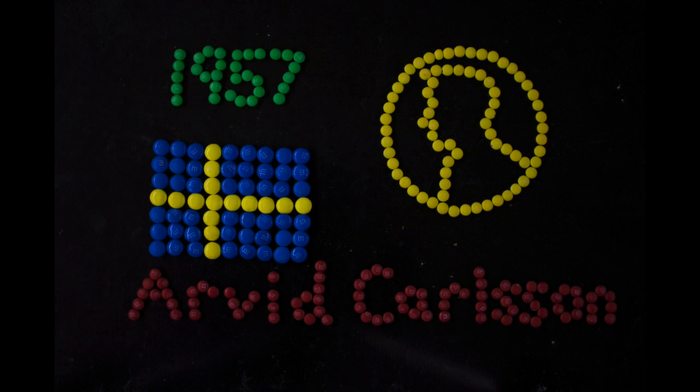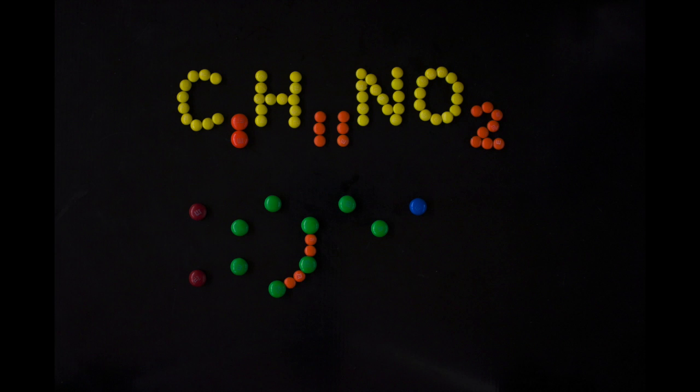The components of dopamine are carbon, hydrogen, nitrogen, and oxygen. This is the chemical formula as well as the structure.